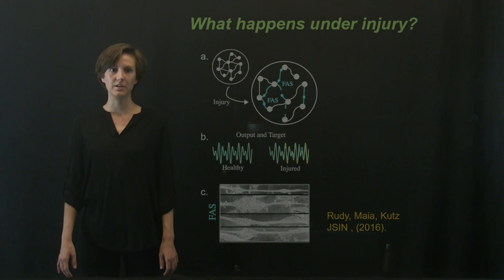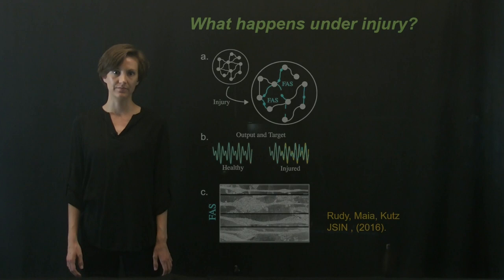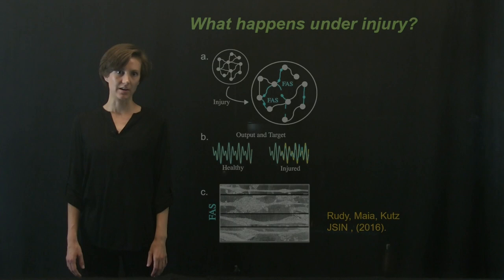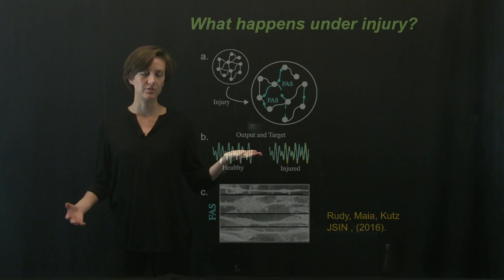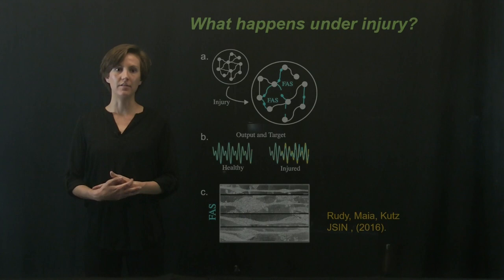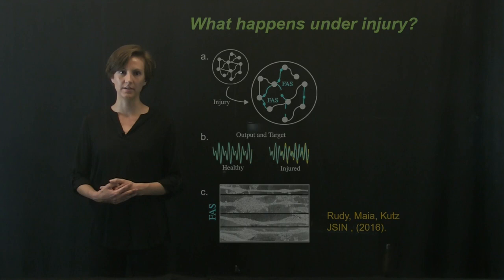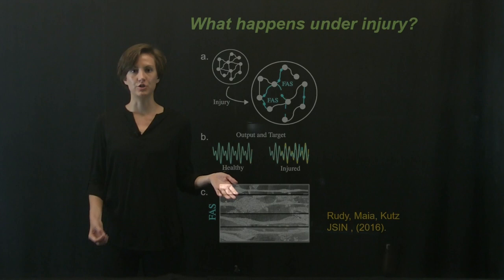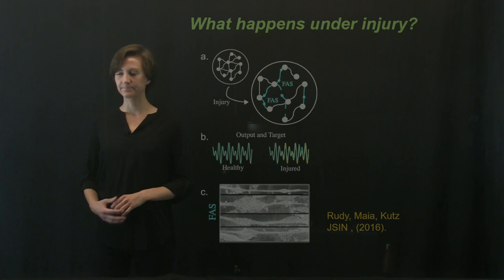Neural networks can be trained to produce a variety of different outputs in response to an input stimulus. This is an example of a forced learning network, which produces this output function when it's healthy. Networks are susceptible to damage, however, and when this network is damaged, it can no longer produce the desired target output. Damage comes in the form of eliminating connections in the network, which emulates focal axonal swelling. This happens in response to traumatic brain injury.